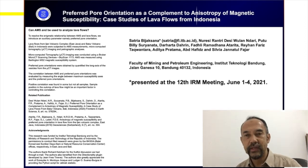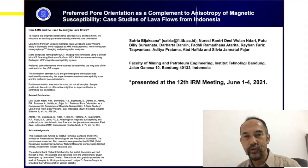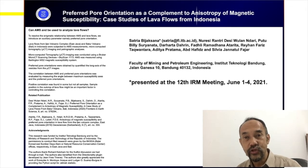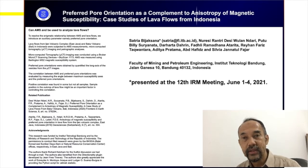Anisotropy of magnetic susceptibility, or AMS, has been used widely in many different studies, including studying volcanic rocks and especially lava flows. The results, however, are not always easy — they are often enigmatic and quite complicated, because AMS does not always show the actual lava flow directions.